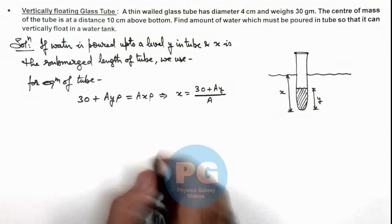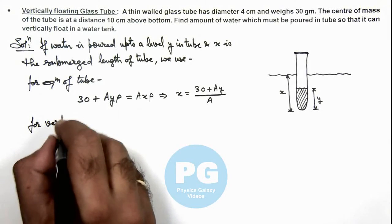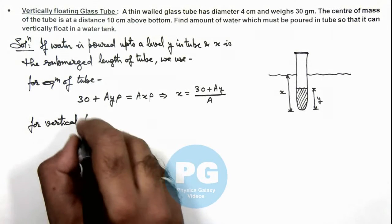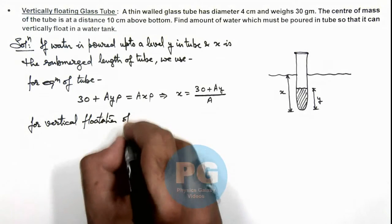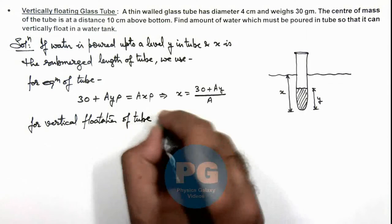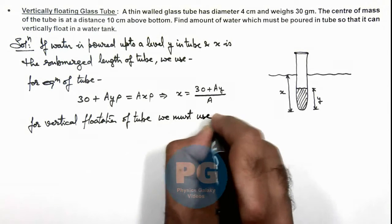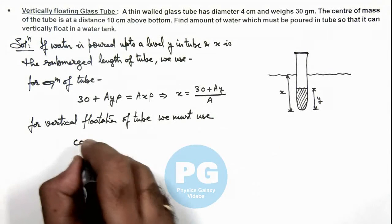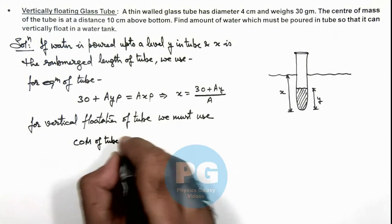And in this situation for vertical floatation of tube we must use the center of mass of tube plus water should be equal to.